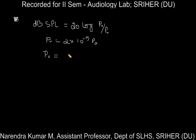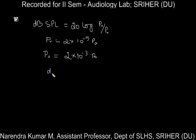For an example, let us take the observed pressure P0 as 2 × 10⁻³ Pascals. We are going to convert this absolute pressure into decibel sound pressure level. Hence we need to substitute this P0 value in the dB SPL formula.